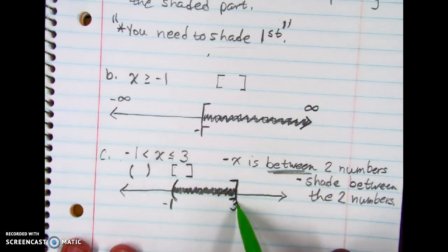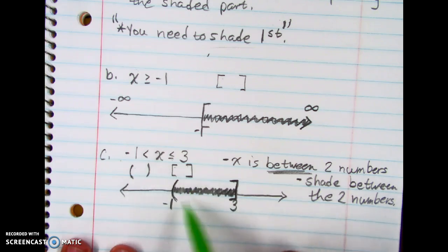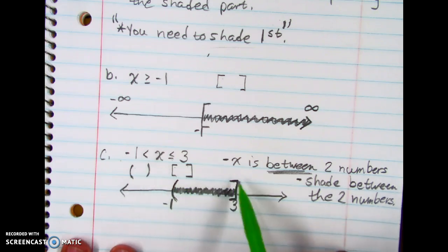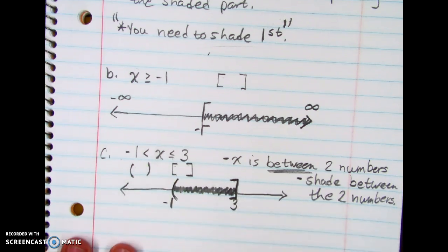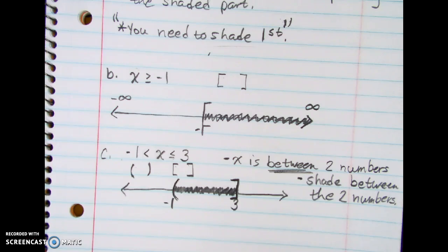So X is between negative 1 and 3, we shade between them, use a parenthesis on the left cupping around it and a bracket on the right cupping around it, based on the inequality signs. And that's all there is to graphing inequalities — it's simple and easy. Now let's go ahead and give you some practice.